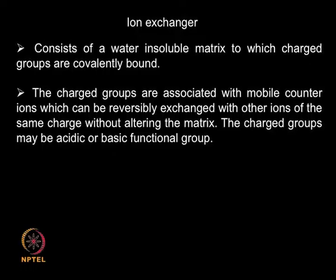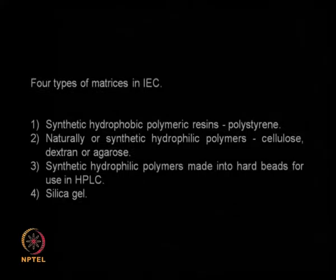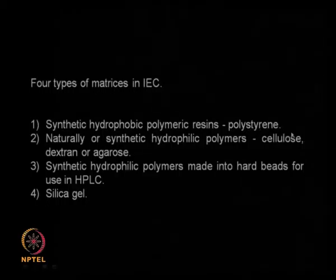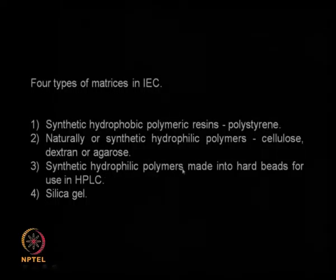An ion exchanger consists of an insoluble matrix as the base, on which ionic ligands are immobilized through covalent bonds. The charge groups could be acidic or basic functional groups. There are four types of matrices: synthetic hydrophobic polymeric resins like polystyrene; natural or synthetic hydrophilic polymers such as cellulose, dextran, and agarose; synthetic hydrophilic polymers made into hard beads used in HPLC systems; and silica gel-based matrices.